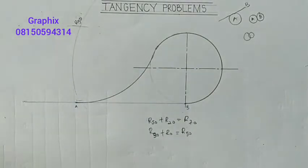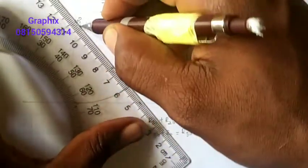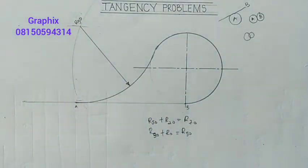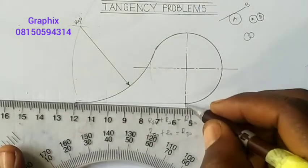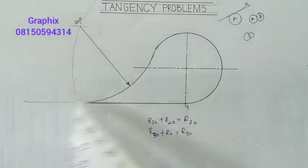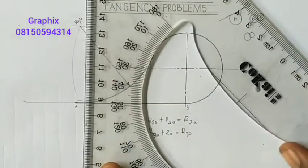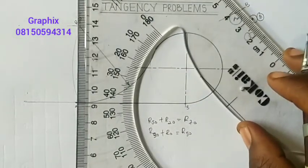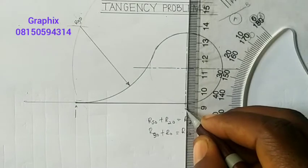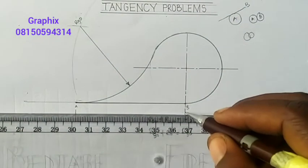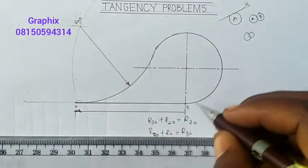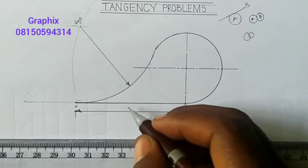So from this point where they meet to this point is my R50. Then from this point straight down to this point is my 65. So let me just do that. 65 here. This is 65.